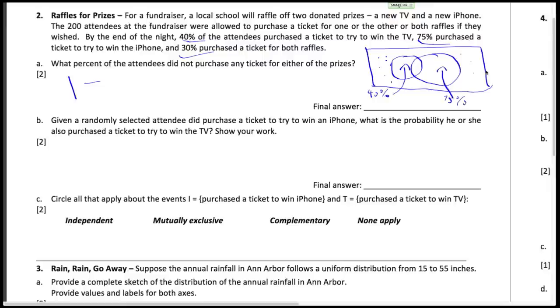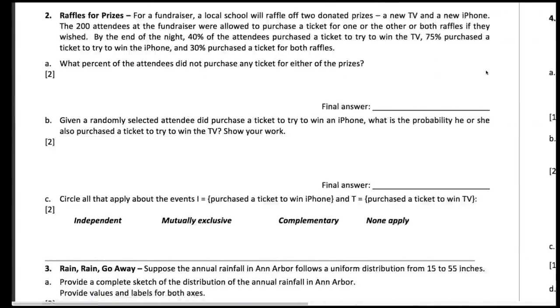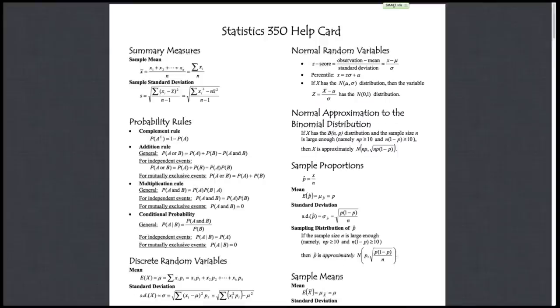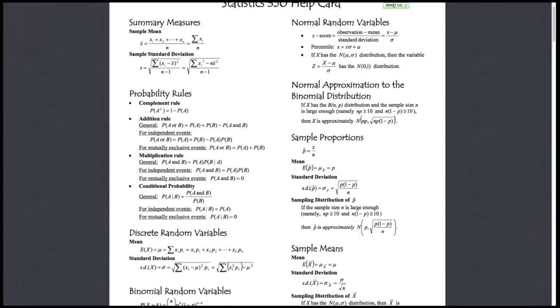Now if we go to the formula card, we can see that, right? We want the probability that somebody got a TV or an iPhone, and so this is the formula. It's just the probability that somebody did the TV, someone did the iPhone, minus the probability that someone did both.